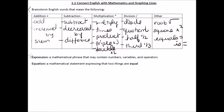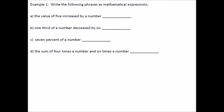Now we'll talk about the difference between an expression and an equation. They look similar, but the equation has an equal sign. An expression is a mathematical phrase that may contain numbers, variables, and operators. An equation also contains these, but it specifically expresses that two things are equal. Example 1: write the following phrases as mathematical expressions — there's not going to be any equal sign.